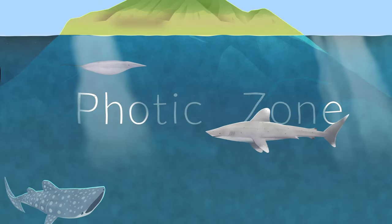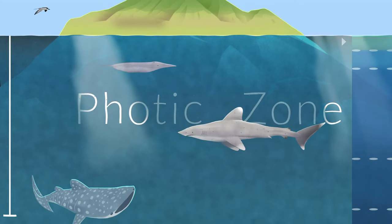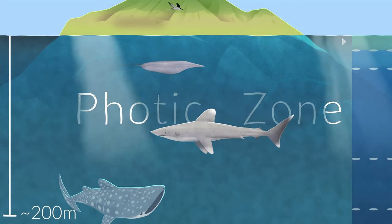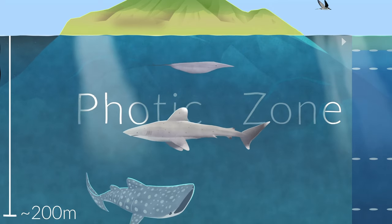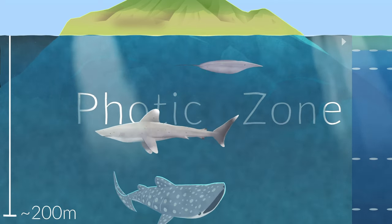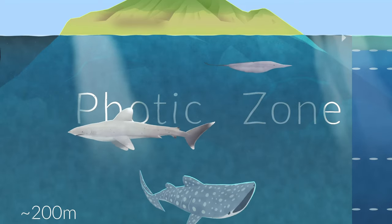The first is the photic zone, which extends from the surface down to where light levels approach 1%. Because sunlight is readily available here, fueling photosynthetic life at the base of the food chain, the majority of all marine life is found in this zone.